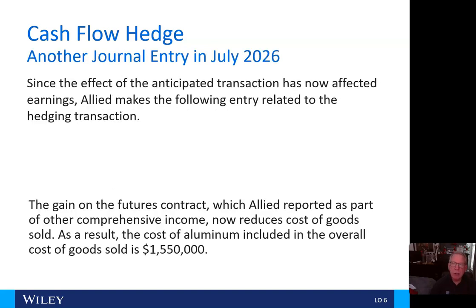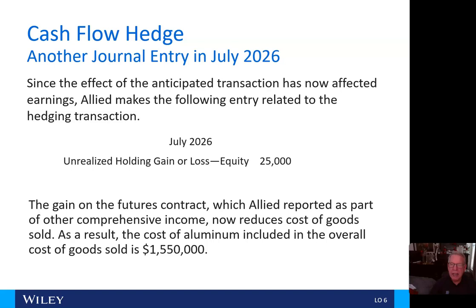Since the effect of the anticipated transaction has now affected earnings, Allied makes the following entry related to the hedging transaction. In July 2026, Allied is going to debit unrealized holding gain/loss to equity for $25,000 and credit cost of goods sold for $25,000. The gain on the futures contract, which Allied reported as part of other comprehensive income, now reduces the cost of goods sold. As a result, the cost of the aluminum included in the overall cost of goods sold is $1,550,000.